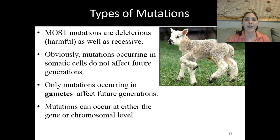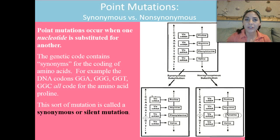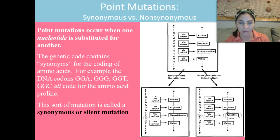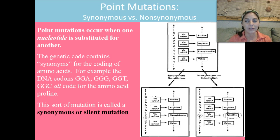Mutations can occur at either the gene or the chromosomal level. The first type of mutation we're going to discuss is a point mutation. We can classify these as synonymous or non-synonymous — make sure you know all of these vocabulary words: synonymous, non-synonymous, missense, nonsense. Point mutations occur when one nucleotide is substituted for another. The genetic code contains synonyms, and that's the first type of point mutation: synonymous.